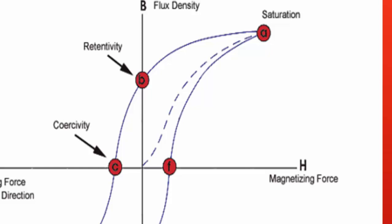After that, when the magnetic force is reversed, the curve moves to point C, where the flux has been reduced to zero. This is called the point of coercivity.